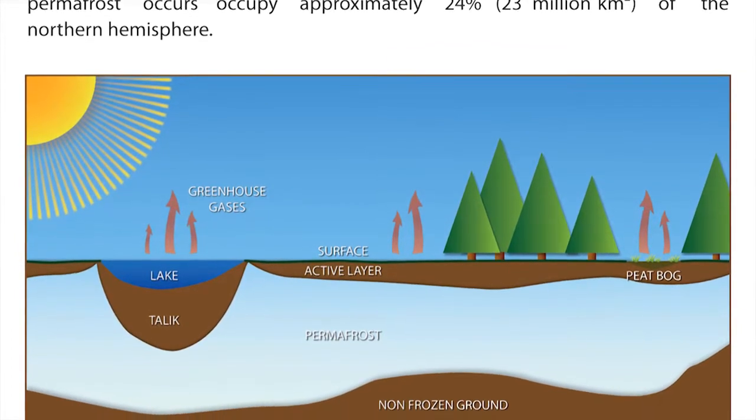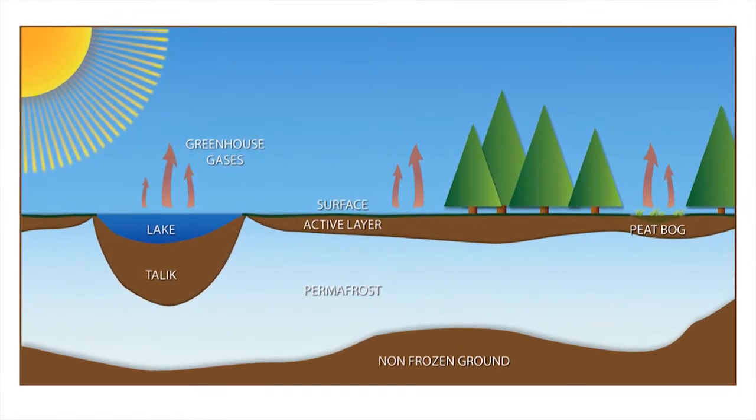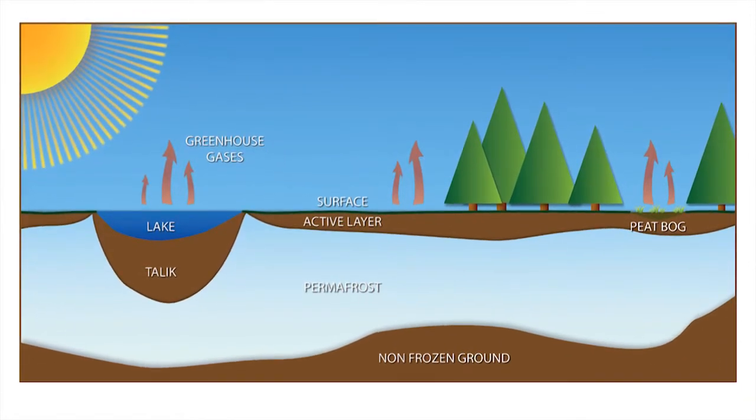Permafrost, because it is a thermal condition of the ground, is directly dependent on the temperature of the air. Therefore, if you are in a region with very cold temperatures — in the Arctic, the Antarctic, or in mountain regions — the permafrost is going to go very deep, because the frost penetrates very deep into the surface.